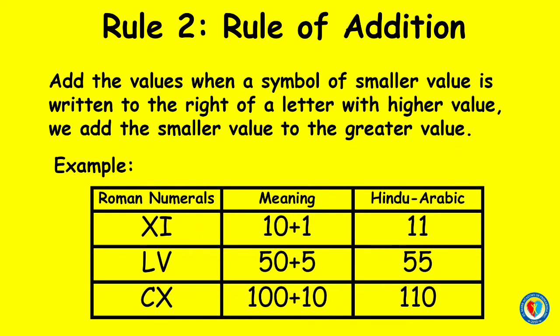Rule number two: rule of addition. Add the values when a symbol of smaller value is written to the right of a letter of higher value. We add the smaller value to the greater value. Example: XI — X has a value of 10, I has a value of 1, so we add 10 and 1. The answer is 11. Next, LV — L has a value of 50, V has a value of 5. Add 50 and 5. The answer is 55.